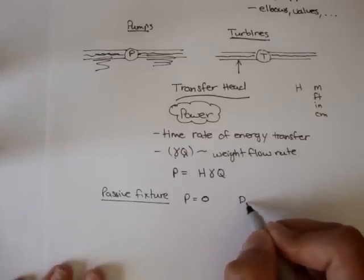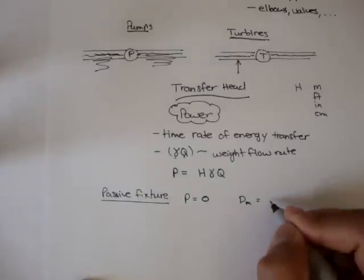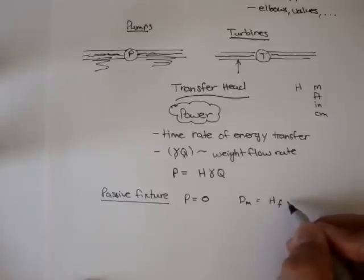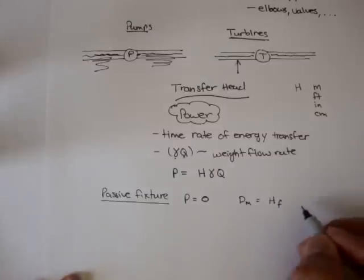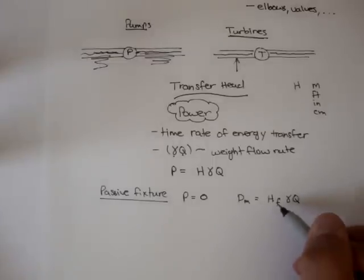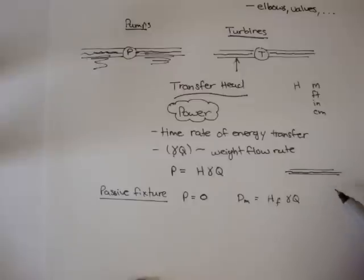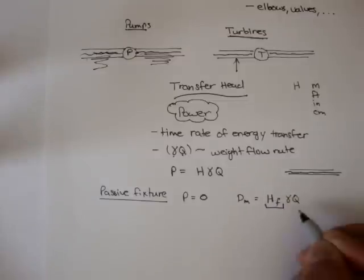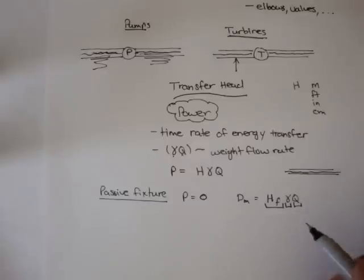But passive fixtures do have some losses. DM stands for mechanical dissipation losses, and for a passive fixture it's equal to HF — H sub F — which stands for the transfer head for passive devices, also referred to as head loss or frictional head loss, times the weight flow rate, gamma times Q. For example, if there was a passive pipe and water was flowing inside, and the problem said the pipe had a frictional head loss of 10 feet, that would be this term.